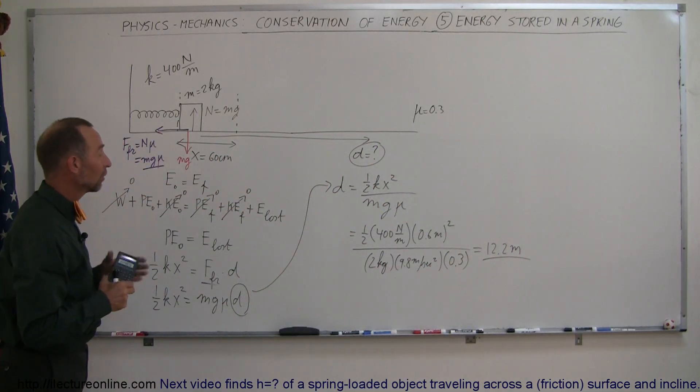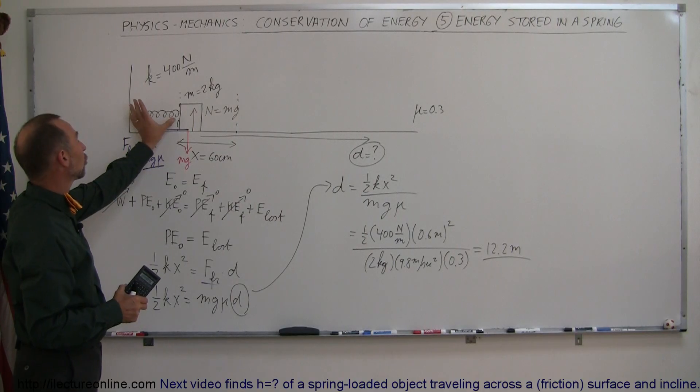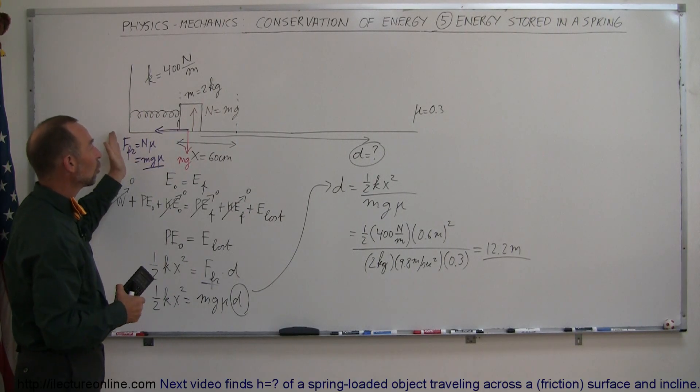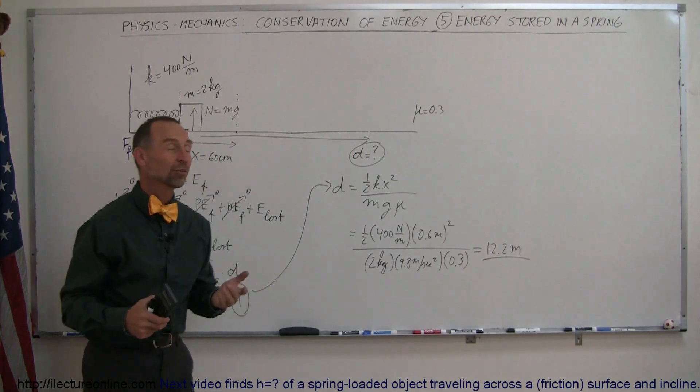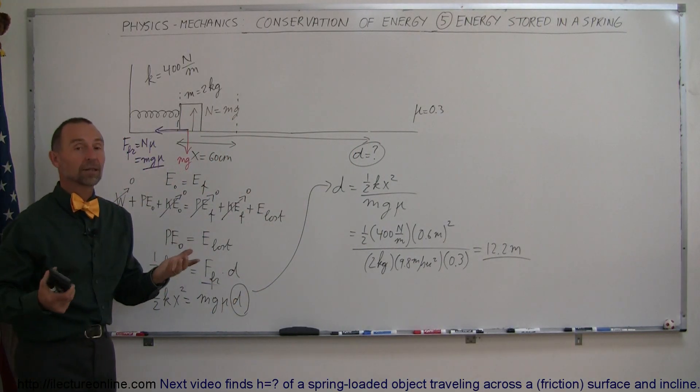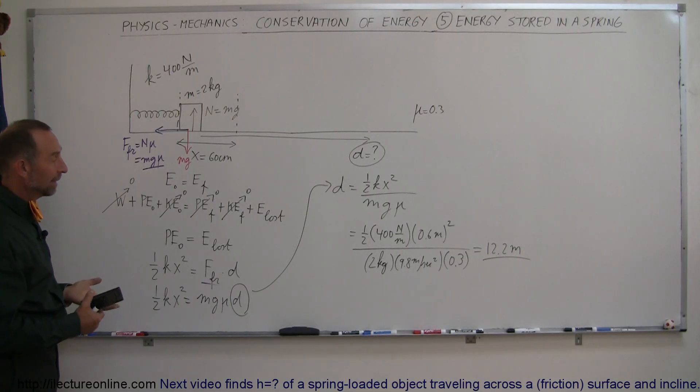So just call it 12.2 meters, and that's how far that block will slide before coming to an end. That means that all the energy stored in the spring by compressing it will be used to overcome the friction, making the block travel a distance of 12.2 meters before all the energy has been expended. And that's how you do that problem.